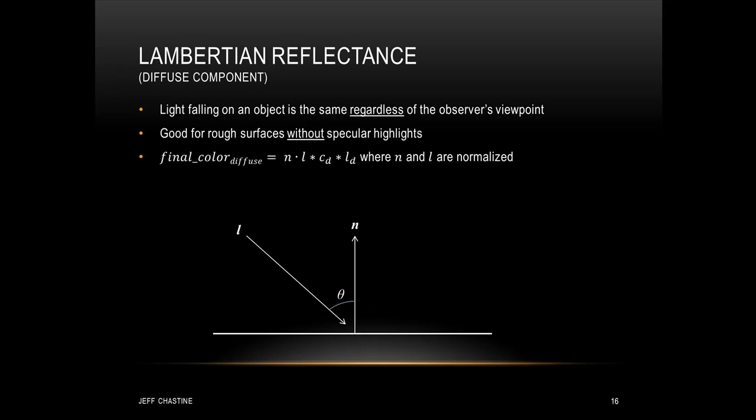So to calculate the diffuse component, we're only going to need vectors N and L. Now the reason that we don't need these other vectors is because the light that's falling on an object is the same regardless of where the camera is. Also you should note that this lighting model is really good for rough surfaces. In other words, those without any specular highlights. So if we're going to calculate the base amount of light that's hitting this surface, it's going to be relative to the angle between vector N and vector L. In other words, it's going to be N dot L times CD times LD. And again, for this to happen, N and L are both normalized.